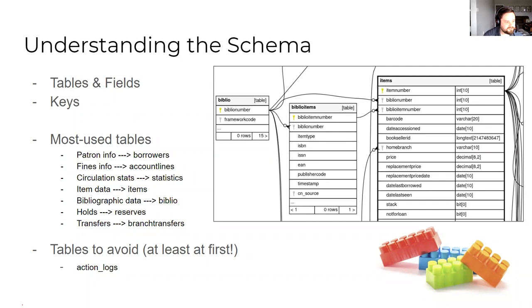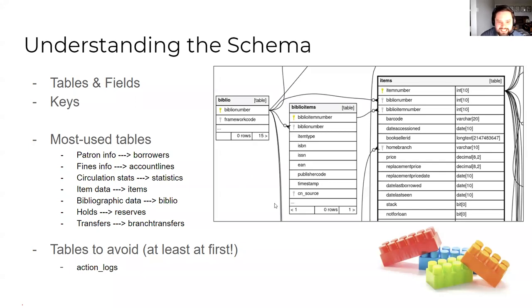There was a question about where to find the schema, and there's a link in the chat. We'll also show you how to get there easily from the report screen a little later on. Tables to avoid, at least at first, are action logs — they're huge and it's hard to connect things correctly. Usually anything you can get from action logs is a little more in-depth, so for basic Koha SQL we're going to avoid that one for now. Circulation stats from the statistics table can also be really slow in a big system, so that's something to be aware of.